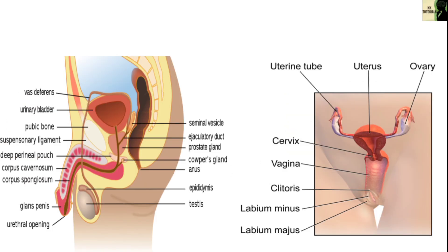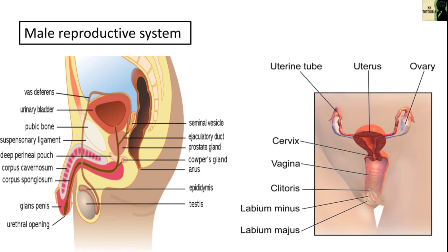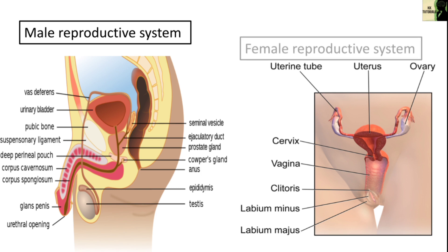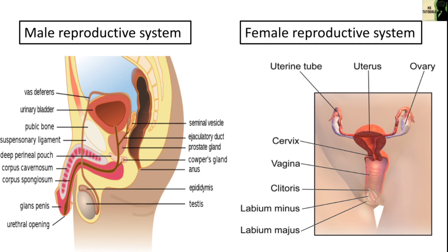The human reproductive system includes the male reproductive system, which functions to produce and deposit sperms, and the female reproductive system, which functions to produce egg cells and to protect and nourish the fetus until birth.